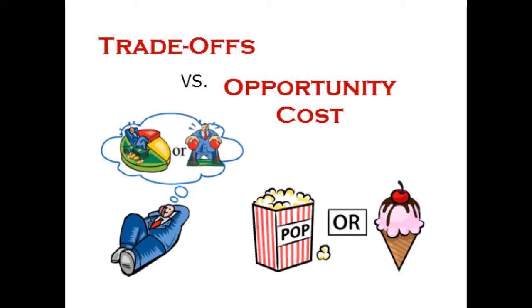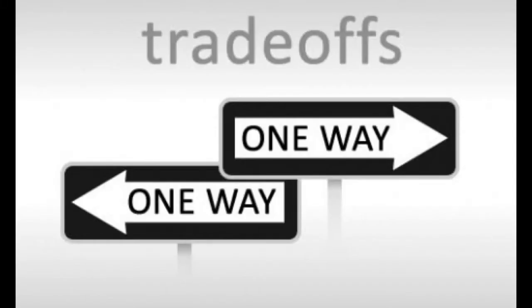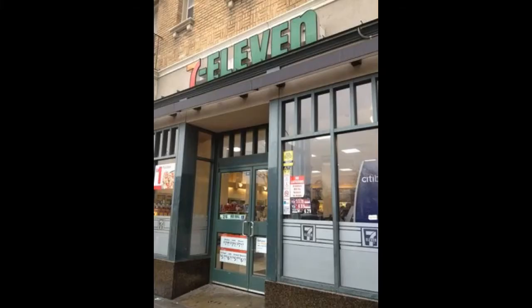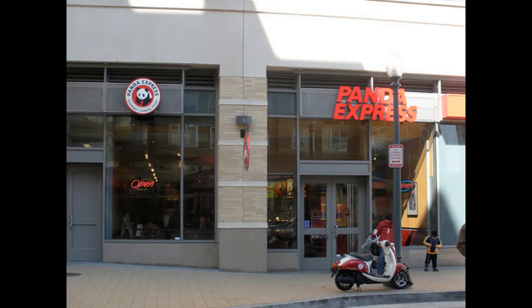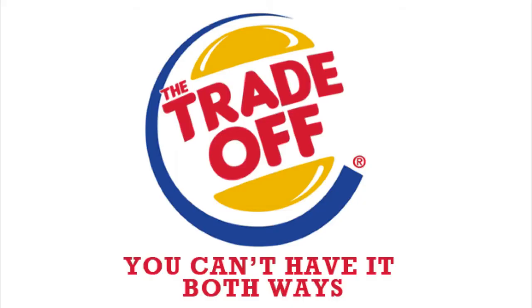Trade-offs versus opportunity cost: when we sacrifice one thing to obtain another, that's called a trade-off. Let's say you only have enough money to go to 7-Eleven, buy a hot dog, and get yourself a metro fare card. With the same amount of money, you could also go to lunch at Panda Express. Well, that's a trade-off.